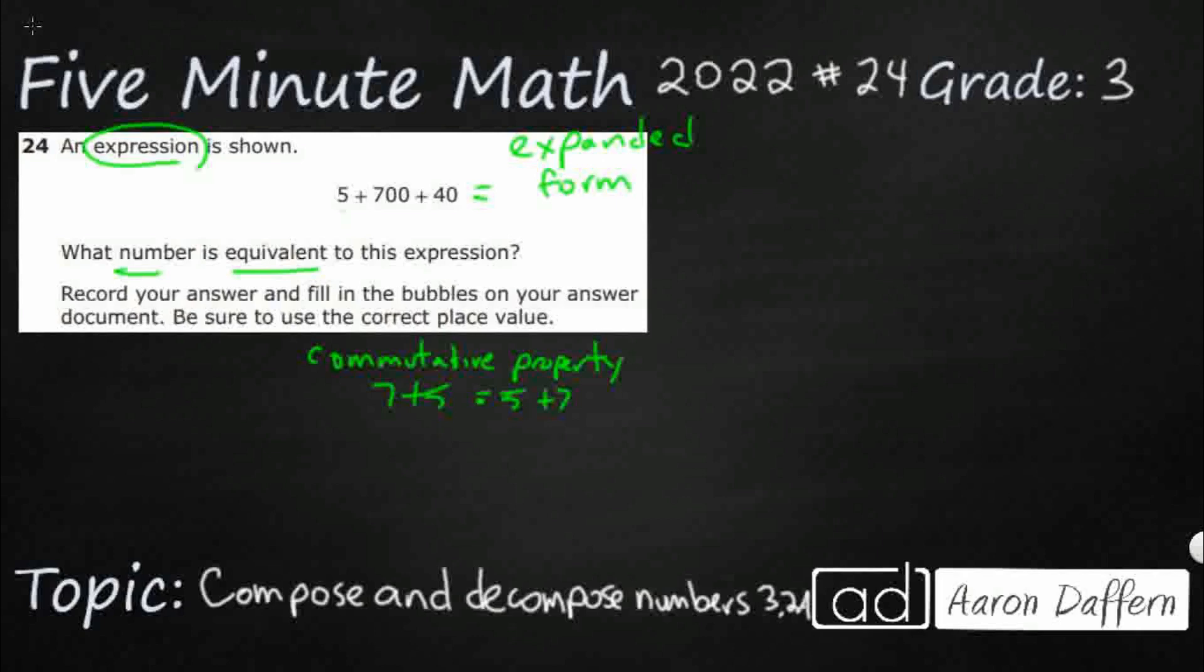I could put this 5 back here at the back, and it's still the same. So I could change it to 700 plus 40 plus 5. See, didn't that look a little bit better?